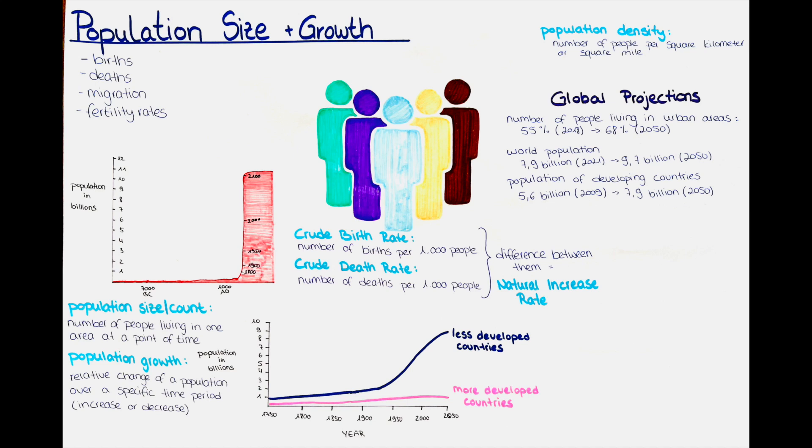Population density is influenced by a variety of factors, including geographic location, climate, availability of resources and infrastructure. For example, urban areas tend to have higher population densities than rural areas due to their concentrated populations and limited land availability. Similarly, areas with a high demand for resources, such as water or arable land, may have higher population densities as people cluster around these resources.